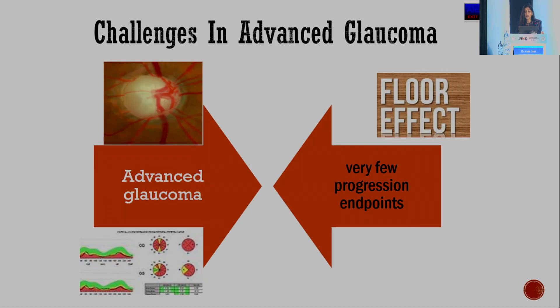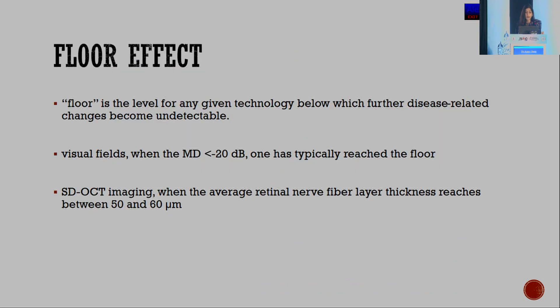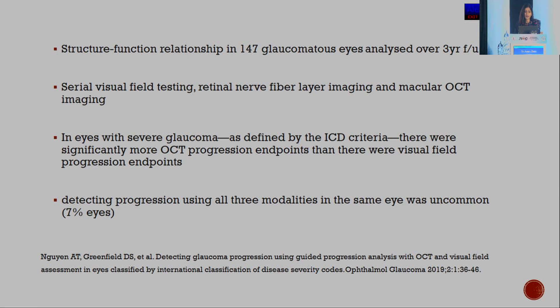Challenges in advanced glaucoma include very few progression endpoints to monitor. The floor effect is a level for any given technology below which further disease-related changes become undetectable. In perimetry, a mean deviation of less than minus 20 decibels is typically known to be reaching the floor, whereas SD-OCT imaging of thickness less than 50 to 60 microns is classified as a floor. A study analyzing the structural-functional relationship in 147 glaucomatous eyes over three years found significantly more OCT progression endpoints than on visual field, and detecting progression using all three modalities was seen in only 7% of eyes.